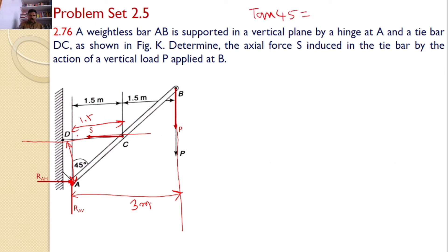Tan 45 is equal to the opposite side 1.5 divided by the adjacent side AD. But tan 45 is equal to 1. So, 1 is equal to 1.5 by AD. Or you can say AD is equal to 1.5. So, this perpendicular distance is also equals to 1.5.